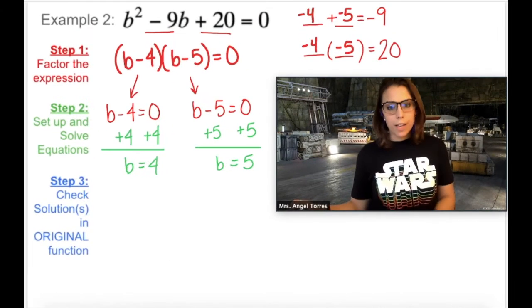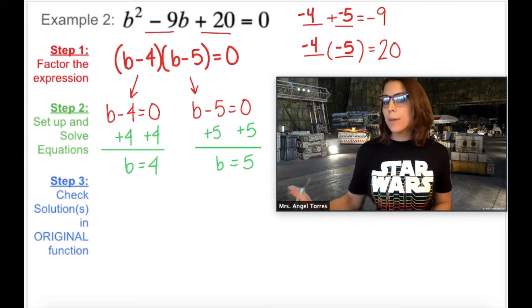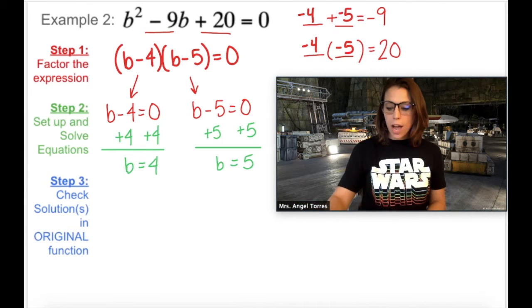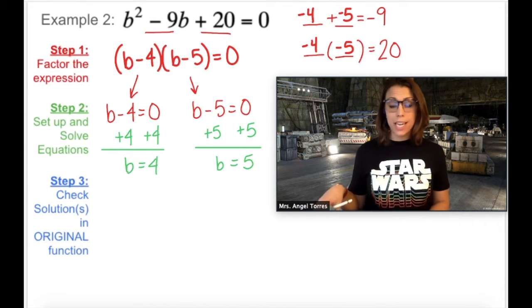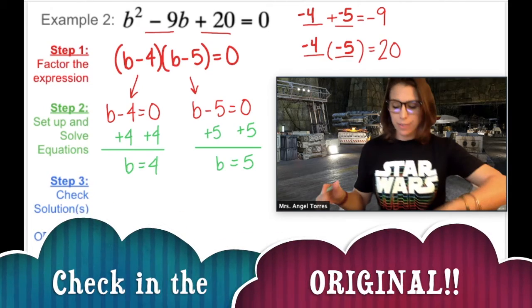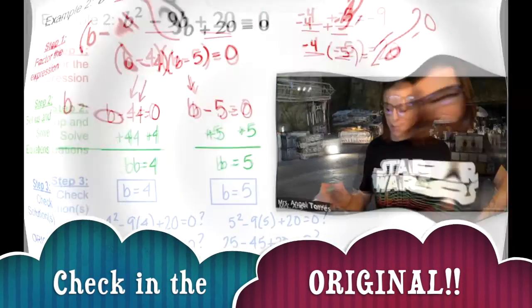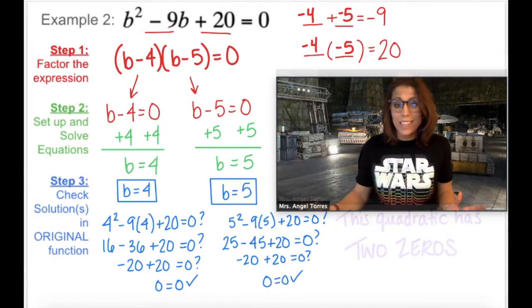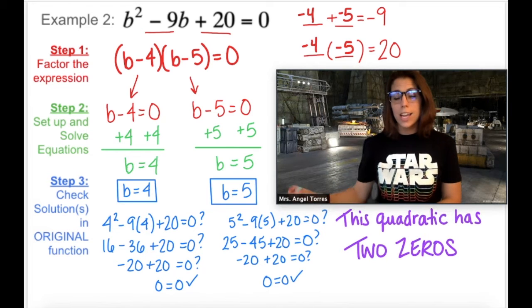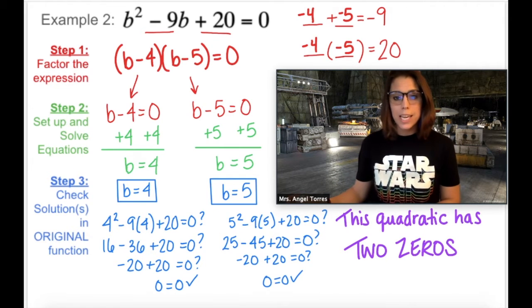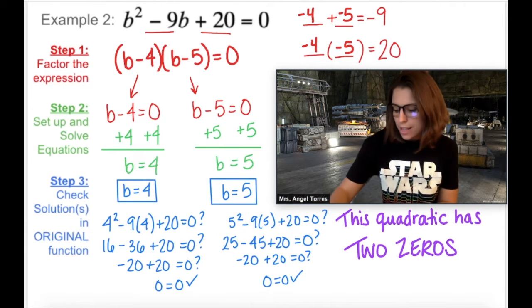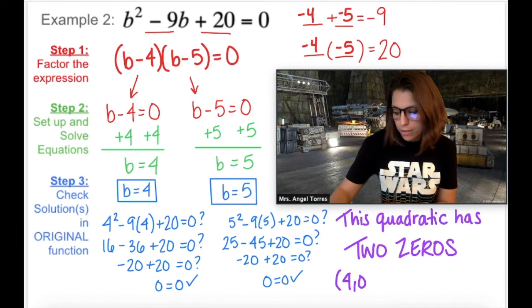So after solving, or frankly just looking at it, I ended up with 4 and 5. So now I'm going to check both of these in the original standard form function. So what does all this mean? This means that the quadratic B squared minus 9B plus 20 has two zeros. They are 4, 0 and 5, 0.